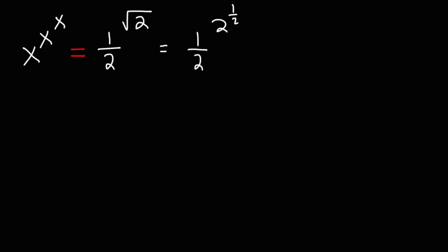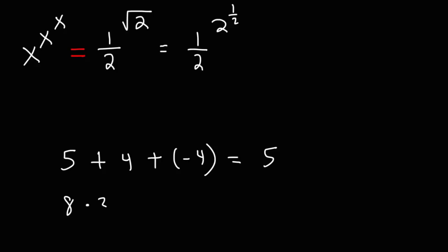Now what do we need to do next? We need to add numbers without changing the value of the expression. For example, if you have 5 and add 4 and negative 4, the value doesn't change because they add to 0. Or if you have 8 and multiply by 3 times one-third — since 3 times one-third is 1 — the value remains 8. So we're going to take the final exponent one-half and multiply it by 2 times one-half. Because 2 times one-half is 1, the value of the expression does not change.